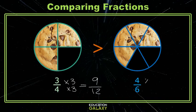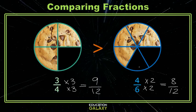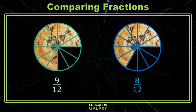On the right, I can multiply the top and bottom by 2. That gives me an equivalent fraction of 8 twelfths. Now, I can see that 9 twelfths is greater than 8 twelfths. Let's try another.